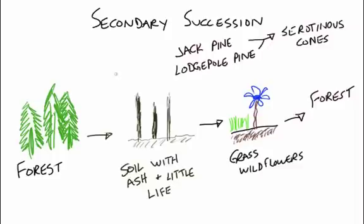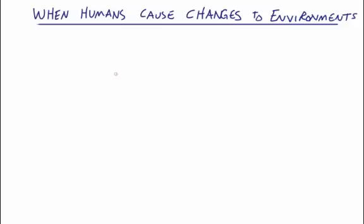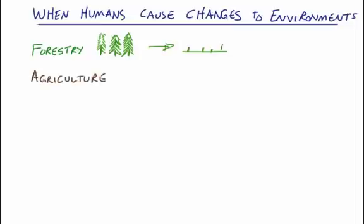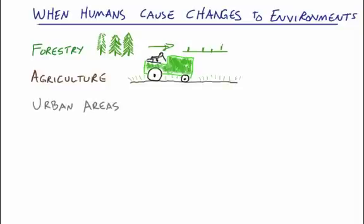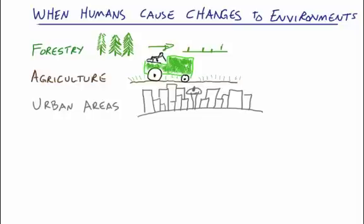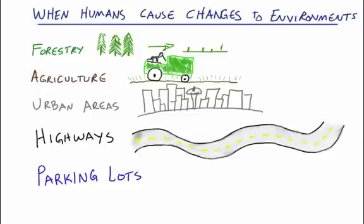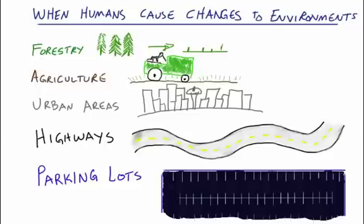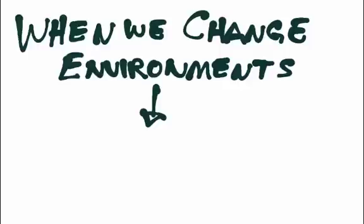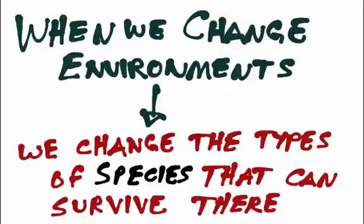We've talked about natural changes; now we'll talk about changes caused by humans. Humans cause changes in many ways: forestry — we cut down forests, clear them out, and sometimes replant; agriculture — we clear land to plant and grow crops; and we build urban areas, highways, and parking lots. When we change the environment, we change the species that can actually survive in that environment — some species adapt better than others.